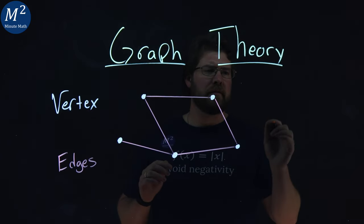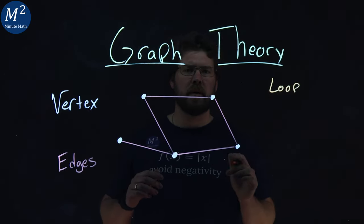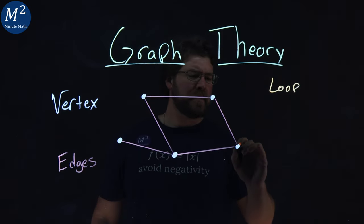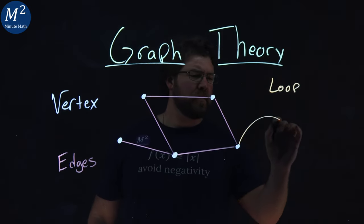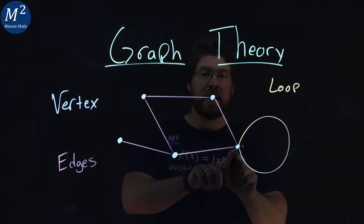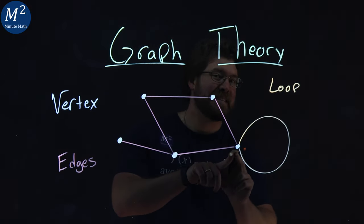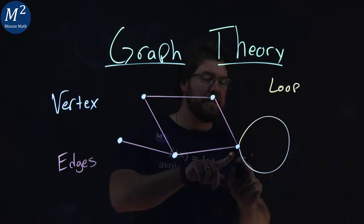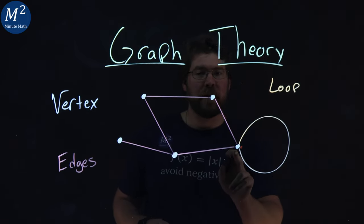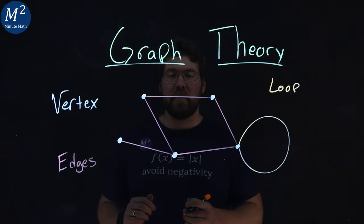Sometimes on a graph you'll have something called a loop. What is a loop? A loop is something like this — we have a vertex that has a single edge that comes back to itself. So our edge here is that loop, and it comes back to itself right there. That is what a loop is in graph theory.